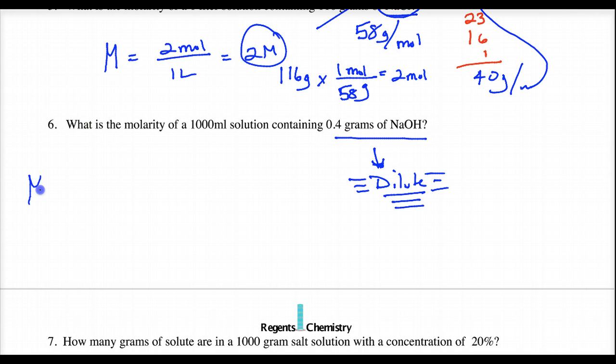So, again, molarity is equal to moles over solute. Well, I have to convert my 0.4 grams of NaOH, and I know from previous work that 40 grams equals 1 mole. Well, this 4 over 40 would be 1 tenth. This is 1 hundredths. This is 0.01 moles. Don't be afraid of a small number.